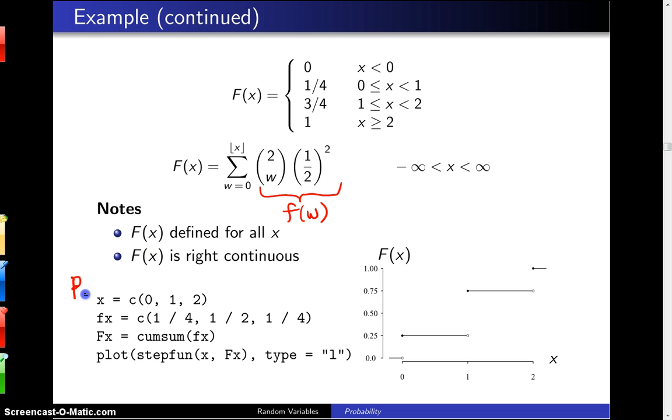If I want to plot this, here is some R code. First thing we do is we set X to the mass values, 0, 1, and 2. We set little f of X to the probability mass function values, and that's 1 fourth, 1 half, and 1 fourth.